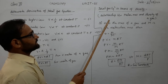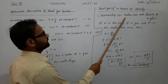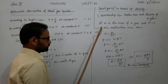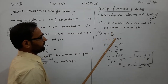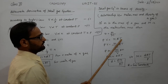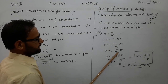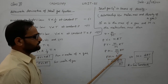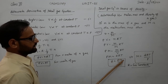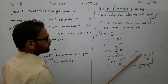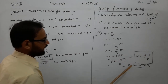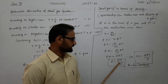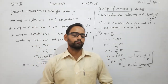We can also represent the ideal gas equation in terms of density. If we consider the mass of the gas as m, and number of moles N = m ÷ M (molar mass), substituting into PV = NRT gives a relationship between molar mass, density, pressure, and temperature, so that molar mass M = dRT ÷ P, where d is the density of the gas.